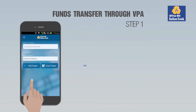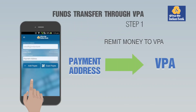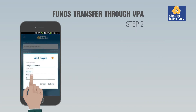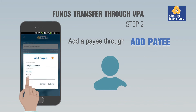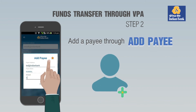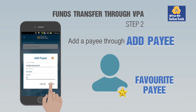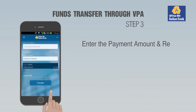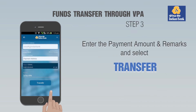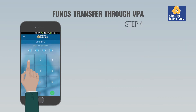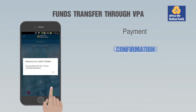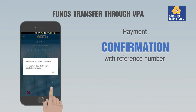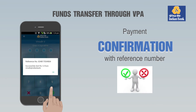Funds Transfer Through VPA. Step 1: Select Payment Address for remitting money to a VPA. Step 2: Add a payee through the Add Payee option and select the option to add the payee to the Favourite Payee List. Step 3: Enter the Payment Amount and Remarks and select Transfer. Step 4: Enter the N-PIN for validation. Payment confirmation with reference number and success or failure message will be displayed.